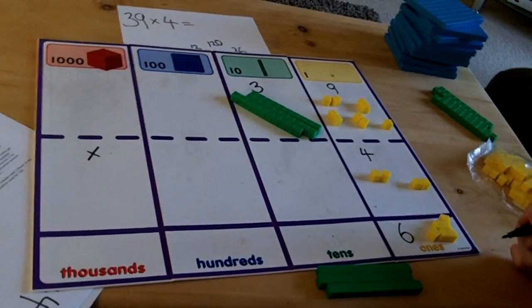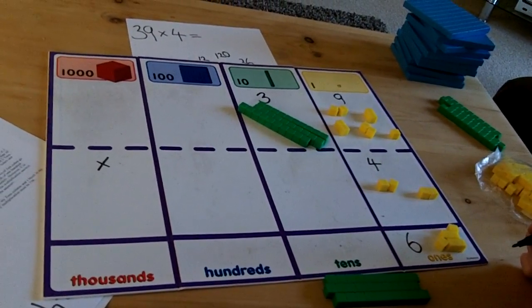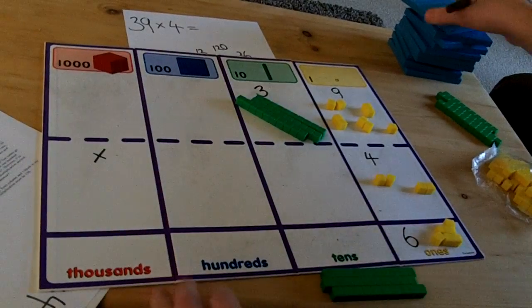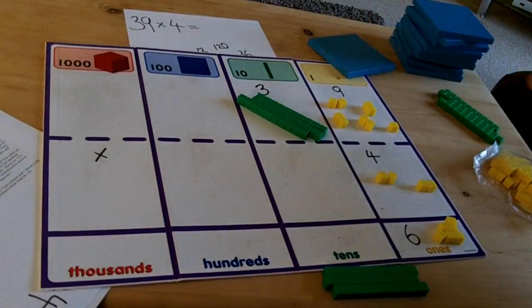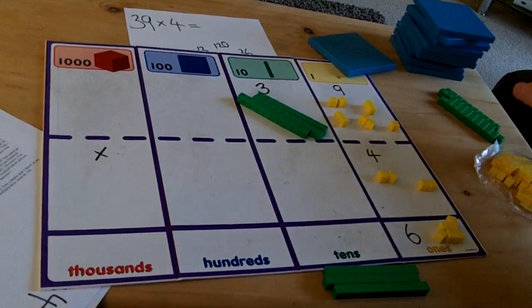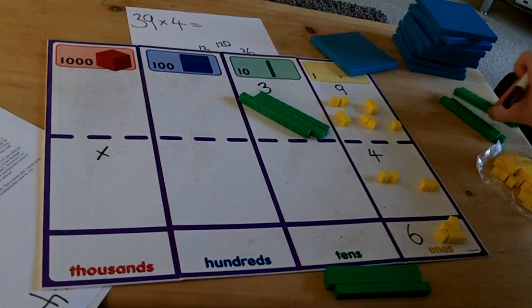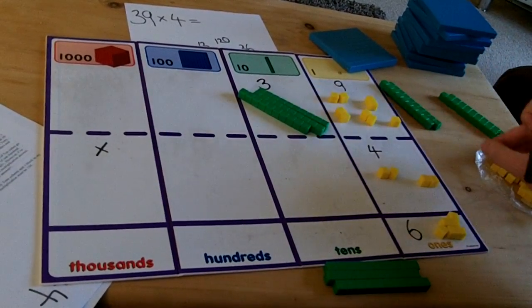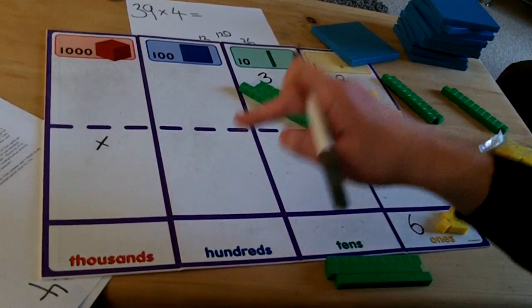120 has 1 hundred and 2 tens so I will need a block of 100 cubes and 2 rows of 10 cubes to show this. I need to put these cubes into my multiplication columns now.